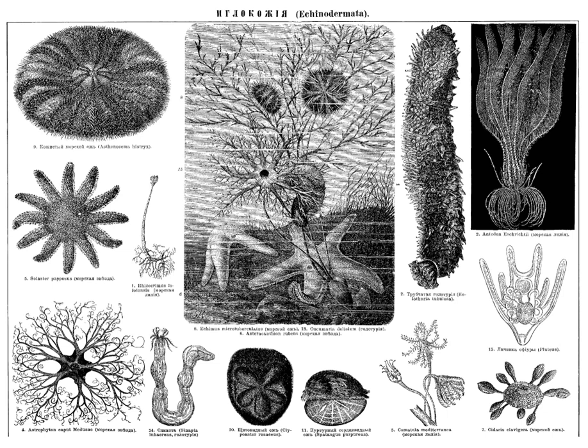Echinoderm is the common name given to any member of the phylum Echinodermata, from ancient Greek ichinos and derma, of marine animals. The adults are recognizable by their radial symmetry and include such well-known animals as starfish, sea urchins, sand dollars, and sea cucumbers, as well as the sea lilies or stone lilies.